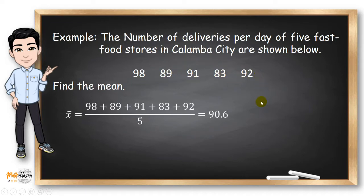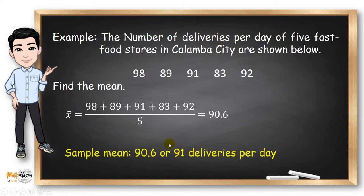And by computing, we have 90.6. But since we are talking about the number of deliveries, let us round it off to 91. So the sample mean is 91 deliveries per day.